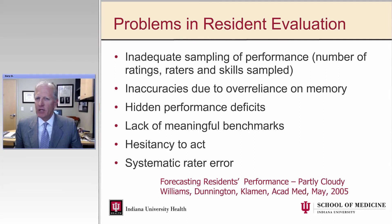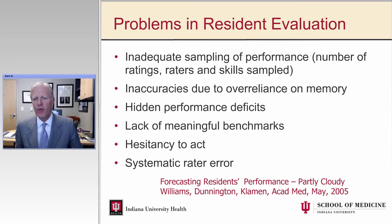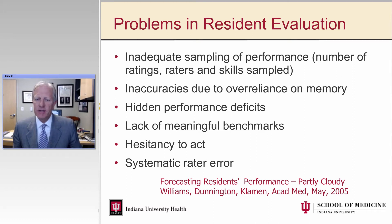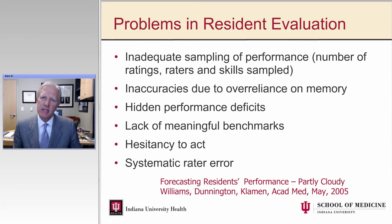We have recently tried to characterize what we believe these problems are in the resident evaluation process, beginning with most frequent to least frequent. The most frequent is clearly inadequate sampling of performance. There are also inaccuracies due to over-reliance on memory, none better illustrated than the end-of-rotation evaluation when we try to recollect all instances during the last one or two months. There are hidden performance deficits, a lack of meaningful benchmarks, hesitancy to act because of brief encounters, and systematic radar error — which is actually probably much less common than the others we've identified.